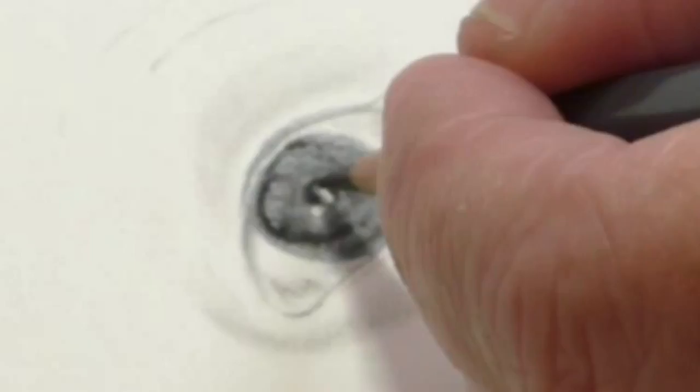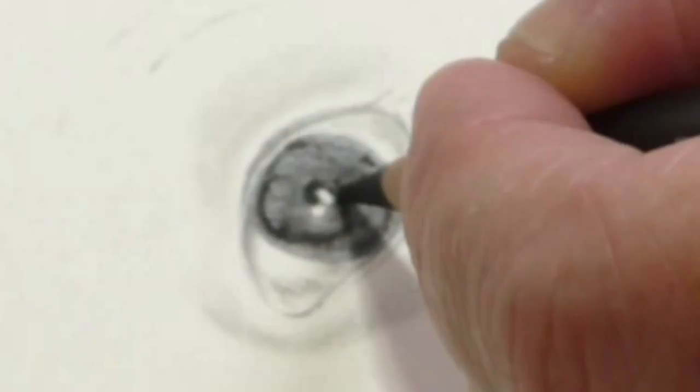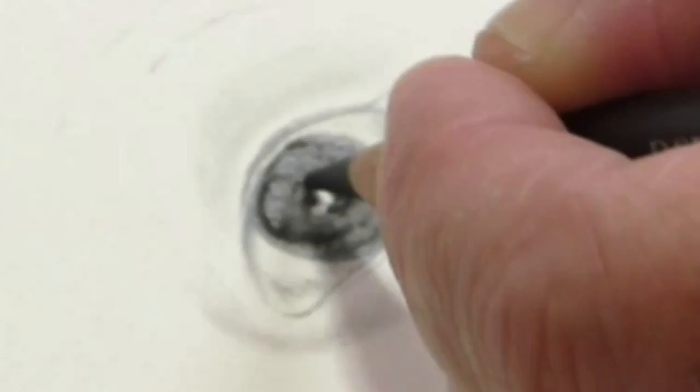Now when you're working with graphite and charcoal pencils, ideally you want to put your charcoal down first. Because with graphite you get the graphite sheen. It's the wax content that's in the graphite, so it's very difficult to get anything else to sit on top of it.